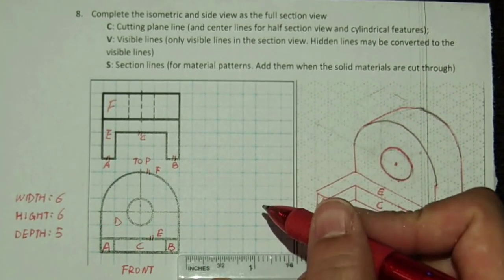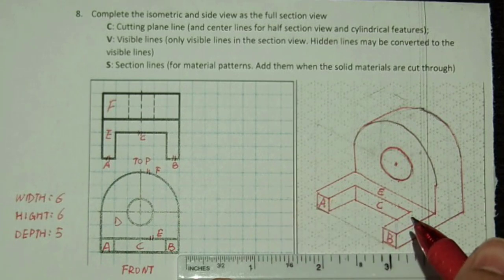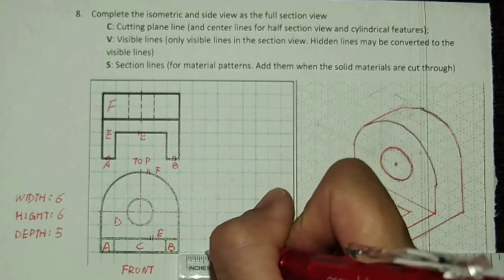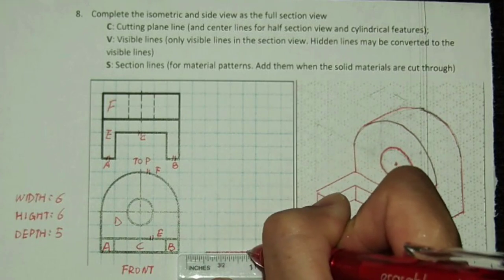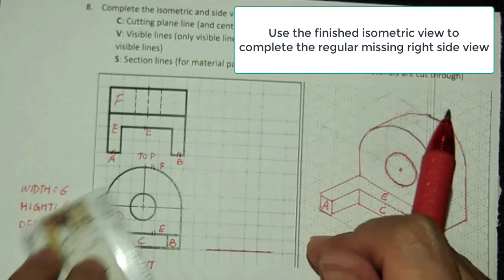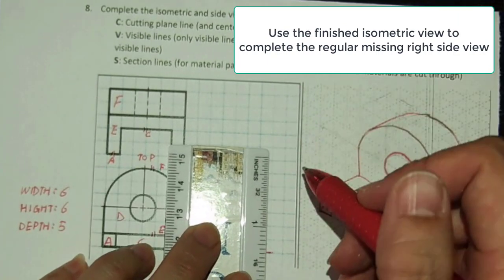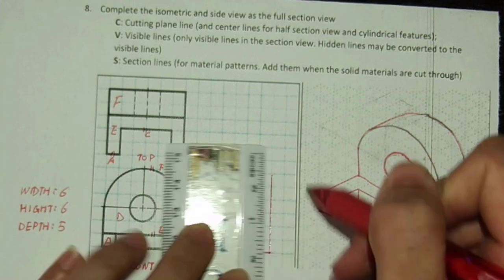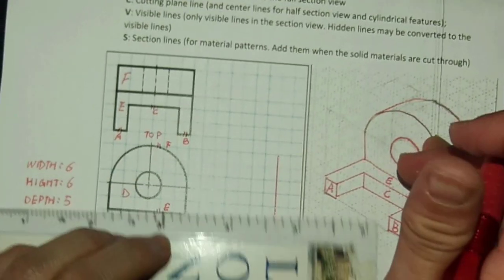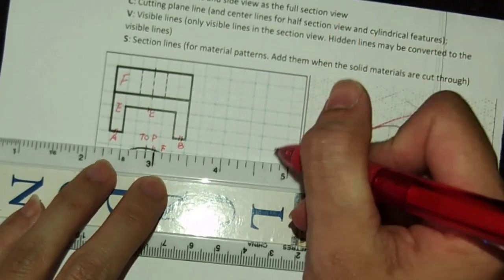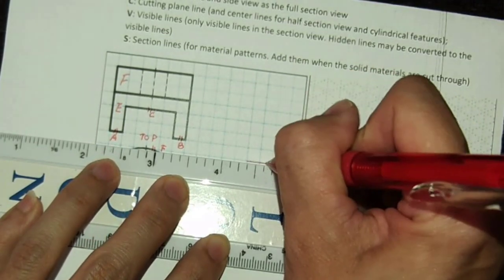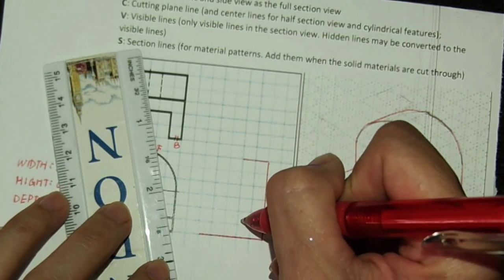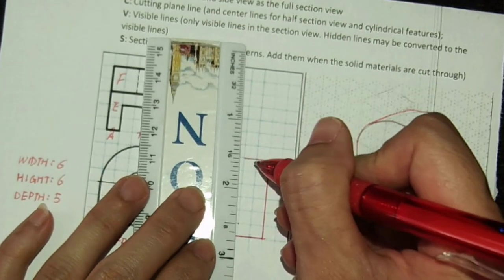At this moment, we have finished the isometric view. We are going to use it to complete the missing right side view. Remember, for the right side view, you have to show all types of lines, including visible lines, hidden lines, and center lines. Make sure your front view and right side view are aligned horizontally.